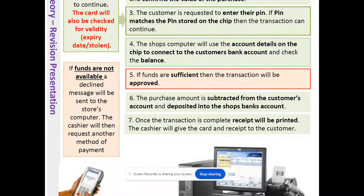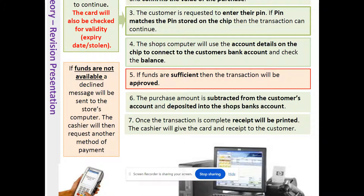The shop's computer uses the account details on the chip to connect to the customer's bank account and check the balance. If the amount — say, 55 pounds — and funds are sufficient, the transaction will be approved and the funds will be transferred electronically to the shop's bank account. If funds are not available, a decline message is sent to the store's computer and the cashier will request another method of payment. Once the transaction is complete, the receipt will be printed and the cashier will give the card and receipt to the customer.